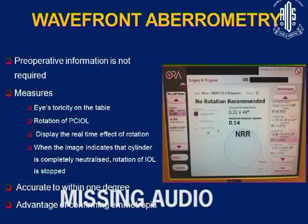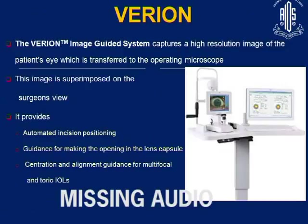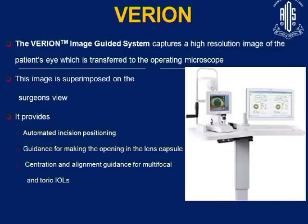This is intraoperative wavefront aberrometry, for which pre-operative information is not required. After surgery, you can calculate the IOL power in the astigmatic calculation and place the IOL based on that calculation. If no rotation is required, it will confirm the lens is on the perfect axis. This is the new Verion image guidance system, which captures high-resolution images of scleral vessels, limbus, and adjacent structures; it is transferred to the operating microscope and there is no need for pre-op marking.